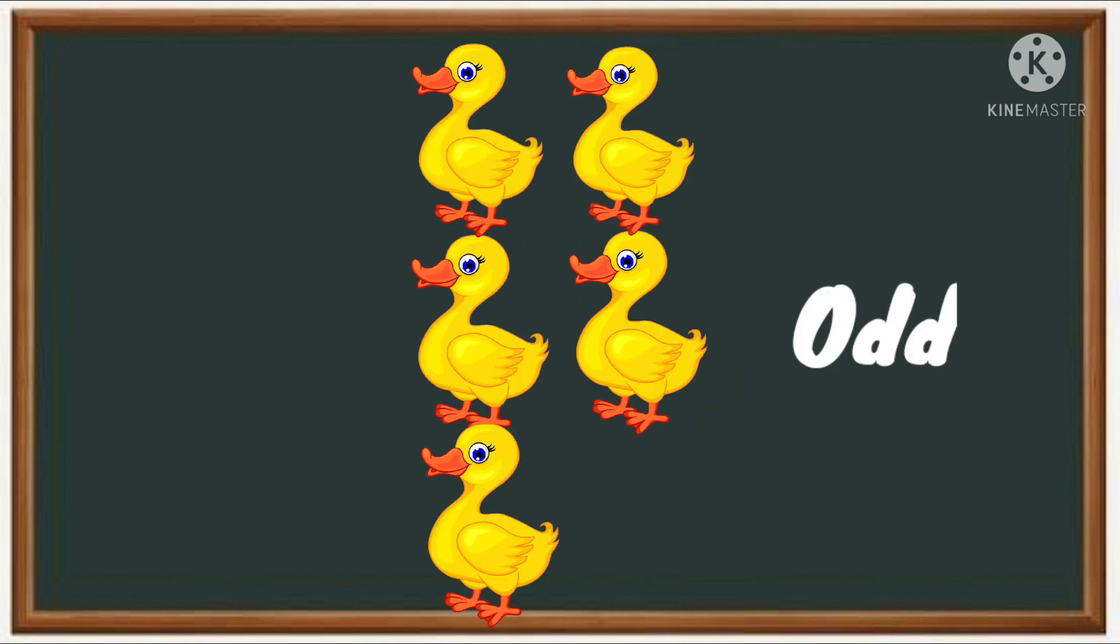Wow, five duckies! Look, one at the bottom doesn't have a friend. That is an odd, so five is an odd number.